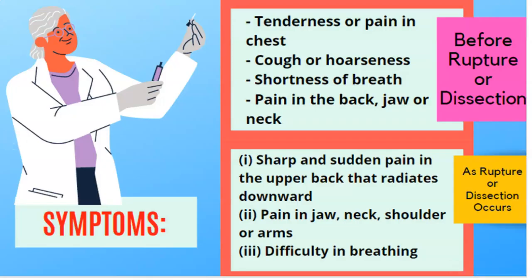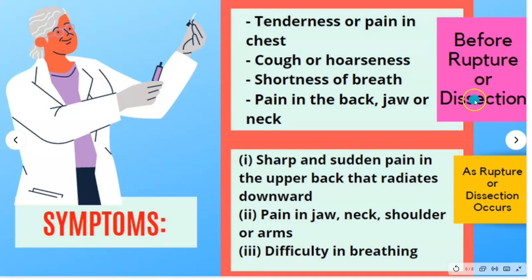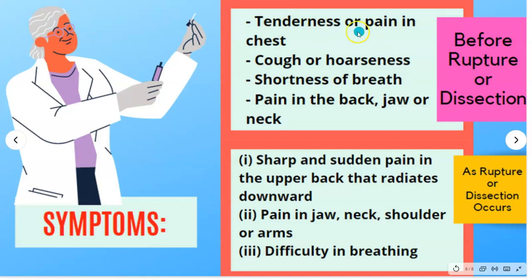Here are the signs. According to research papers and scientific findings, signs are classified into those that appear before rupture and those that occur as rupture happens. Before rupture, when there is already a dilatation or aneurysm likely to burst, symptoms include tenderness or pain in the chest, a cough or hoarseness, shortness of breath, and pain in the back, jaw, or neck.